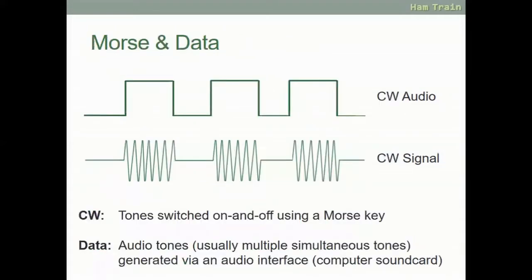With Morse and data — when you're transmitting in Morse code, the transmitter is either on or off. When you press the key down you get a peak in the waveform, and the length of that peak depends on whether it's a dit or a dah. You get periods of frequency, then nothing — frequency, nothing — and the length of the RF transmission determines whether it's a dit or a dah.